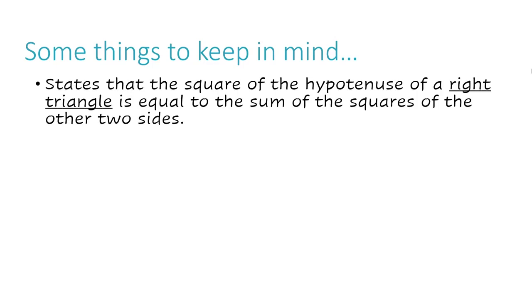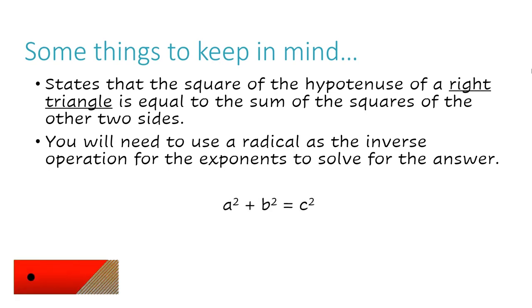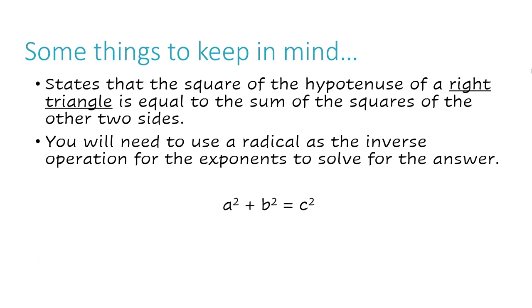Pythagorean Theorem — some things to keep in mind. The Pythagorean Theorem states that the square of the hypotenuse of a right angle is equal to the sum of the squares of the other two sides. You will need to use a radical as the inverse operation for the exponents to solve for the answer. The formula used for the Pythagorean Theorem is a² + b² = c².